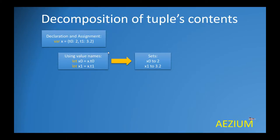An alternative to using indices is using the names or labels assigned to our elements. For instance, the first element is named t0 and the second element is named t1. We can extract the first element using x.t0, where t0 is the label of that element. Similarly, to extract the second element, we use x.t1. This results in x0 being equal to 2 and x1 equal to 3.2 — the same results as when using indices.